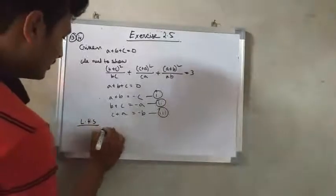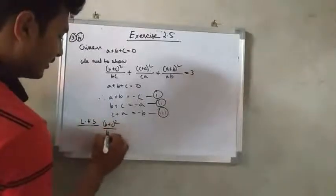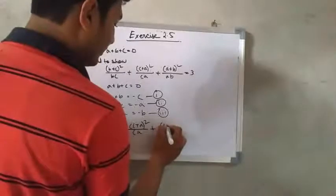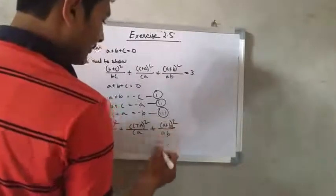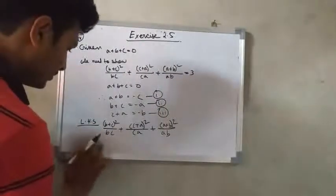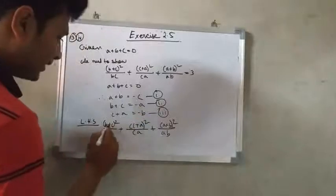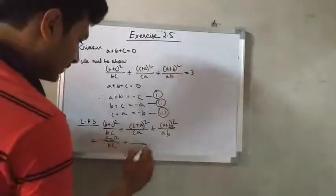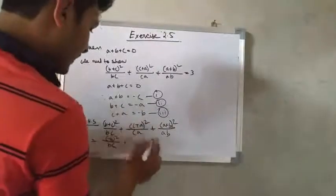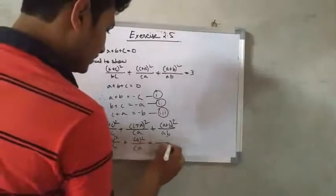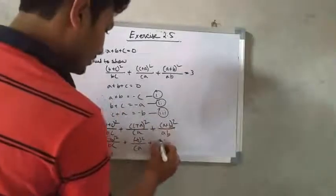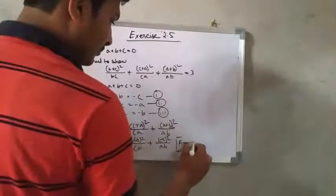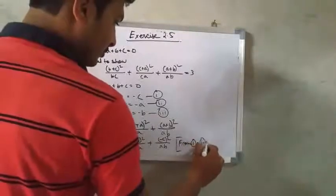I am taking the left hand side: B plus C whole square by BC, plus C plus A whole square by CA, plus A plus B whole square by AB. Now putting the values from equations 1, 2, and 3: B plus C equals minus A, so we get minus A whole square over BC; C plus A equals minus B, so minus B whole square over CA; A plus B equals minus C, so minus C whole square over AB.